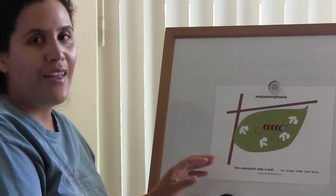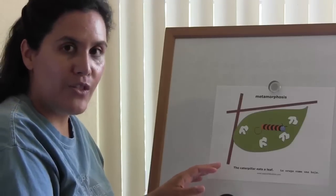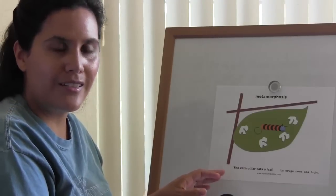Next, the little caterpillar will emerge from the egg and will start to eat the leaf around it.